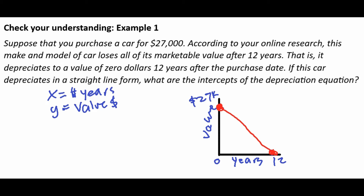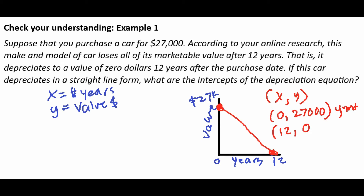When the line crosses the x and y axis, that is where we see the intercepts. So in this equation, we write coordinates as x comma y. The first coordinate, the y-intercept, is zero years at $27,000 — that's the coordinate for the first intercept. And then the other coordinate, the x-intercept, is 12 years with a value of $0.